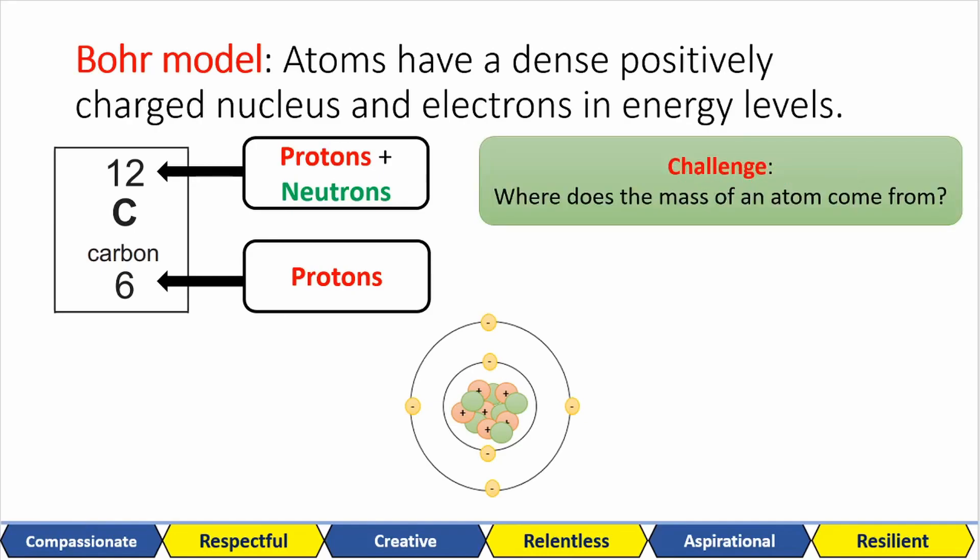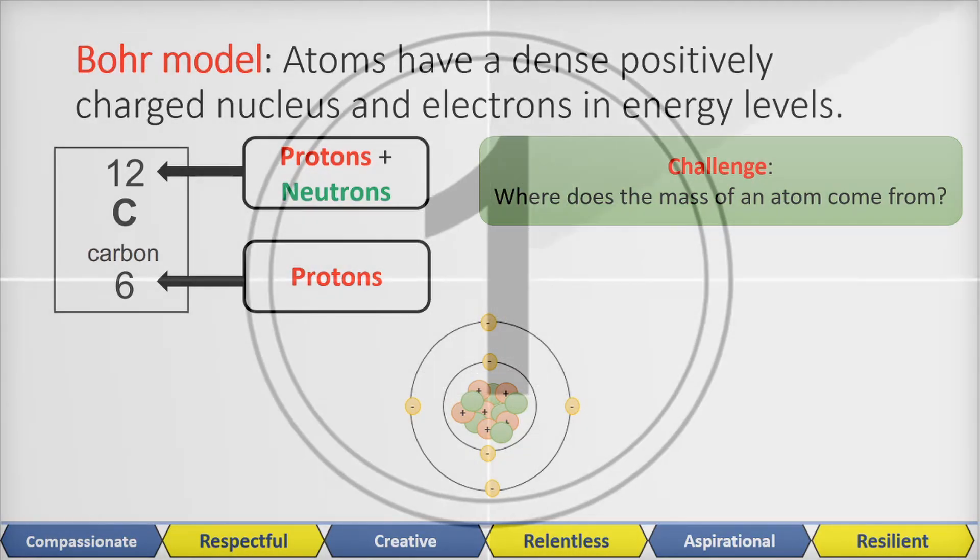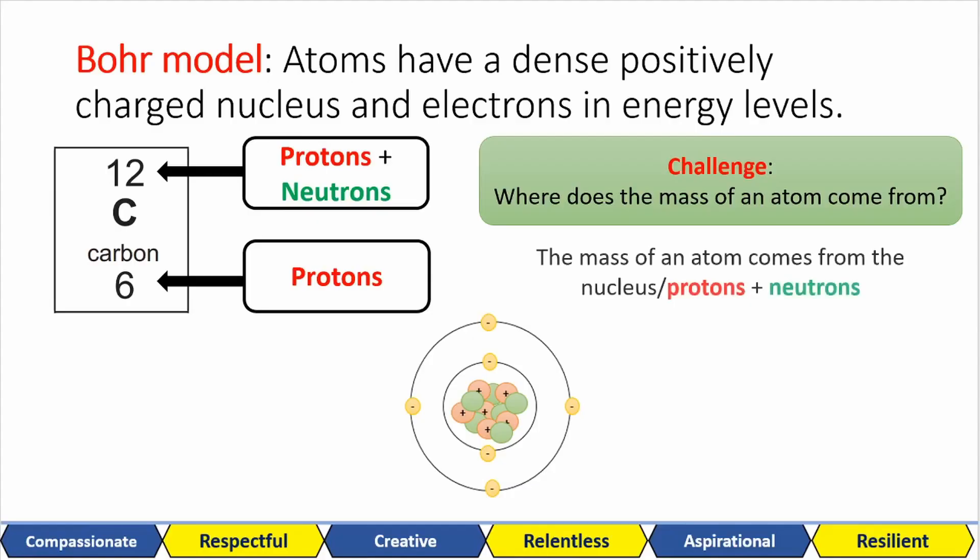See if you can work out this challenge question. The mass comes from the nucleus, which is your protons and neutrons. The mass of electrons is very, very small. You basically don't even count it.